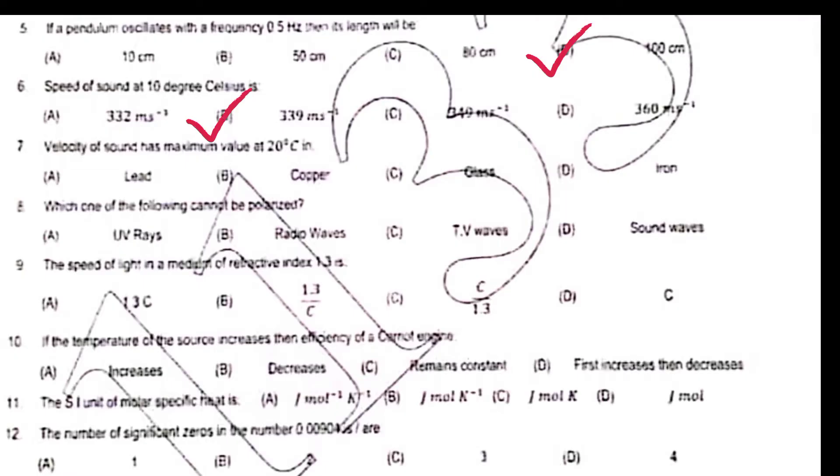Velocity of sound has maximum value at 20 degrees in glass. Which of the following cannot be polarized? Sound waves. The speed of light in a medium of refractive index 1.3 is c over n, so the answer is c divided by 1.3.